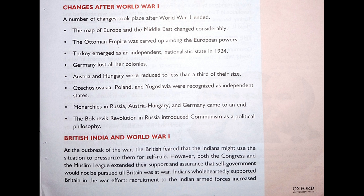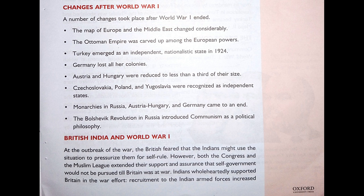Changes After World War One: A number of changes took place after World War One ended. The map of Europe and the Middle East changed considerably. The Ottoman Empire was carved up among the European powers. Turkey emerged as an independent nationalistic state in 1924. Germany lost all her colonies. Austria and Hungary were reduced to less than a third of their size. Czechoslovakia, Poland and Yugoslavia were recognized as independent states. Monarchies in Russia, Austria-Hungary and Germany came to an end. The Bolshevik revolution in Russia and China introduced communism as a political philosophy.